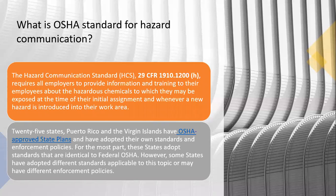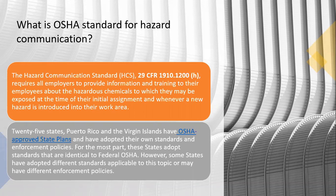So what is the OSHA standard for hazard communication? The regulation can be found in 29 CFR 1910.1200, which signifies general industry, and requires all employers to provide information and training to their employees about the hazardous chemicals to which they may be exposed — at the time of their initial assignment and whenever a new hazard is introduced into the workplace. You need to provide communications and training on the hazardous chemicals found in your workplace, whether that's the farm, a cooling facility, or manufacturing.